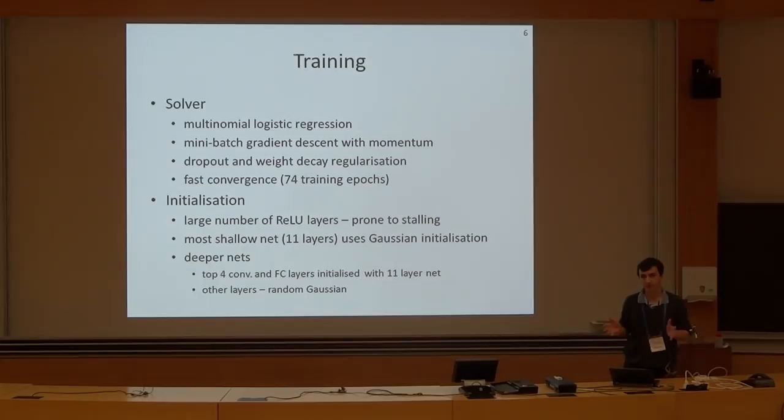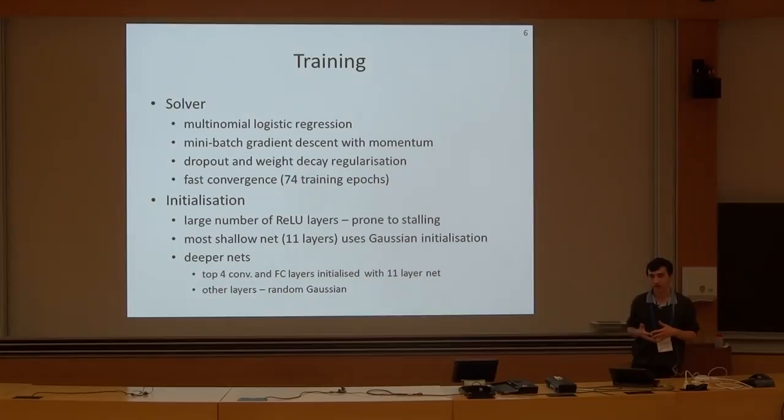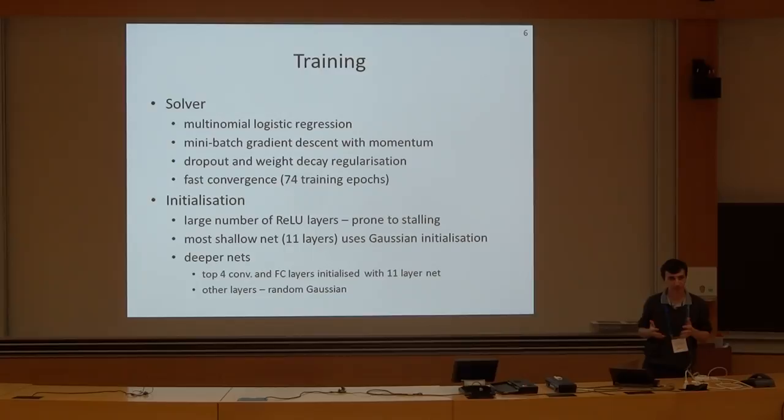The network is trained by optimizing the multinomial logistic regression objective, which is quite conventional. We use regularization in the form of dropout for the fully connected layers and weight decay for all layers. Remarkably, convergence is quite fast in terms of the number of epochs, which can be attributed to the use of these very small convolutional layers, which introduce additional regularization.